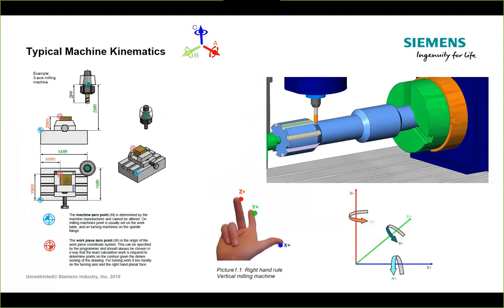We're going to follow what we call the right-hand rule — that's how the kinematics are set up on a given machine. If you take your hand and point your thumb, pointer finger, and middle finger in X, Y, and Z directions, the direction they point is positive. From there, the rotaries that rotate about each linear axis follow the same standard: an A-axis revolves around X, a B-axis revolves around Y, and a C-axis revolves around Z.